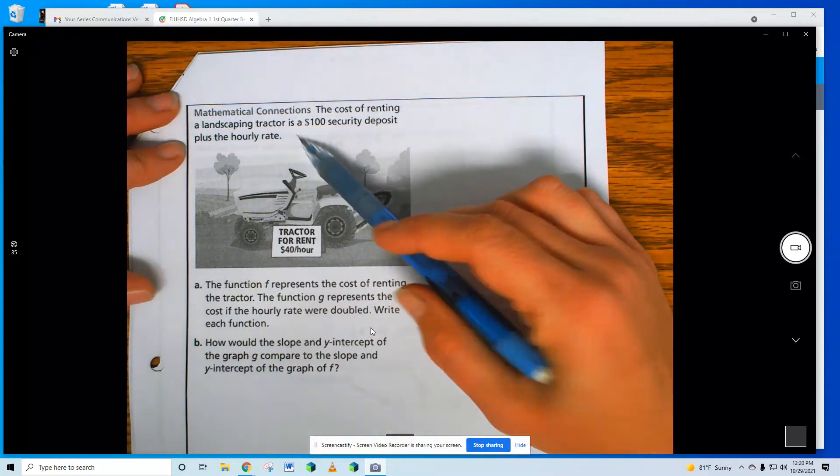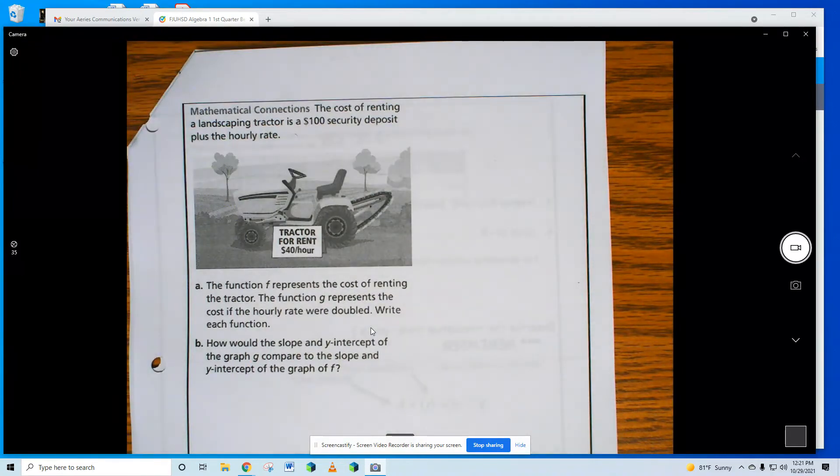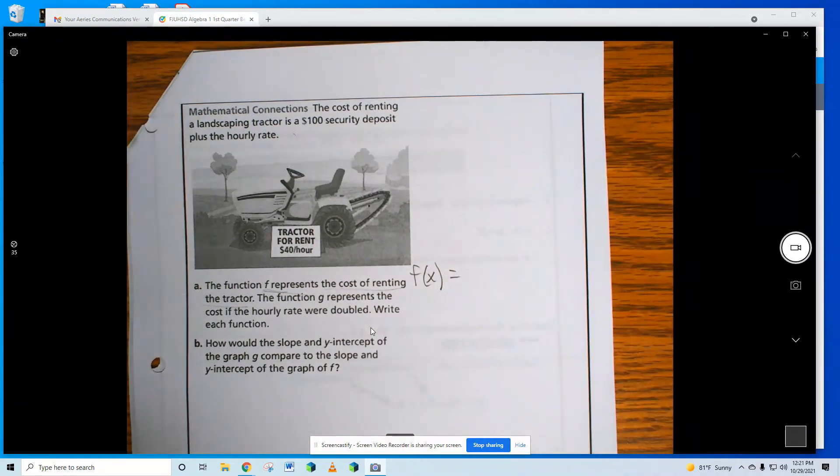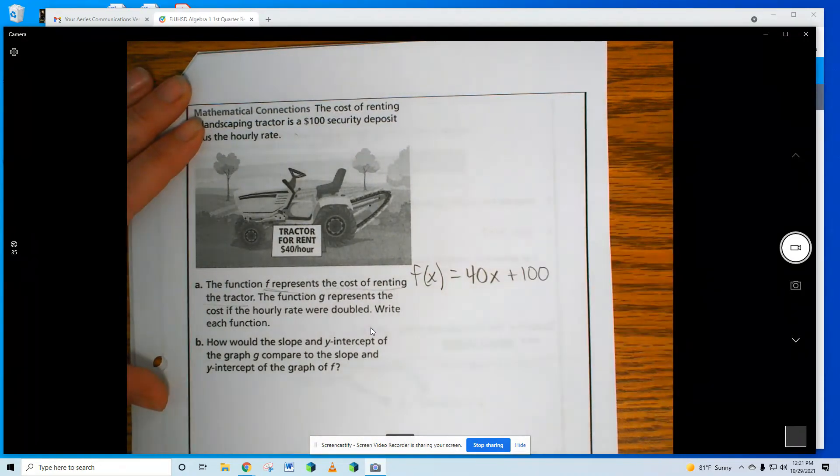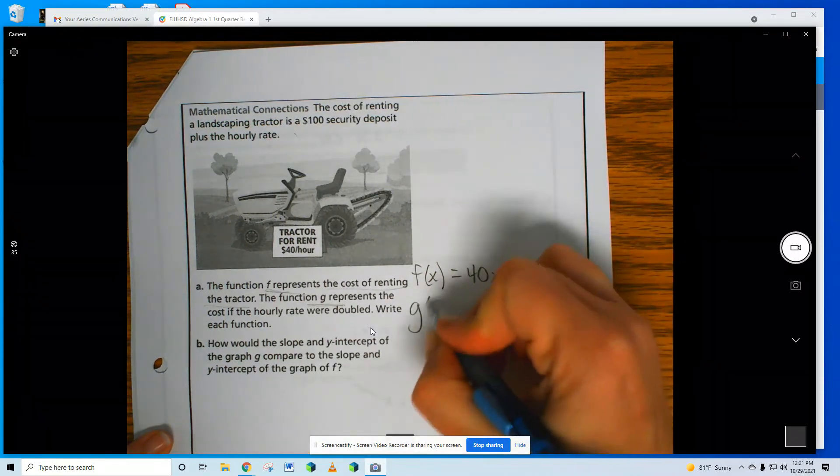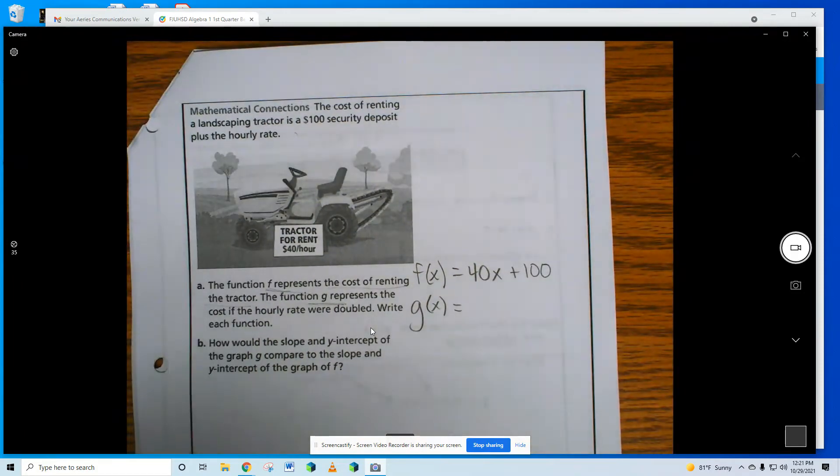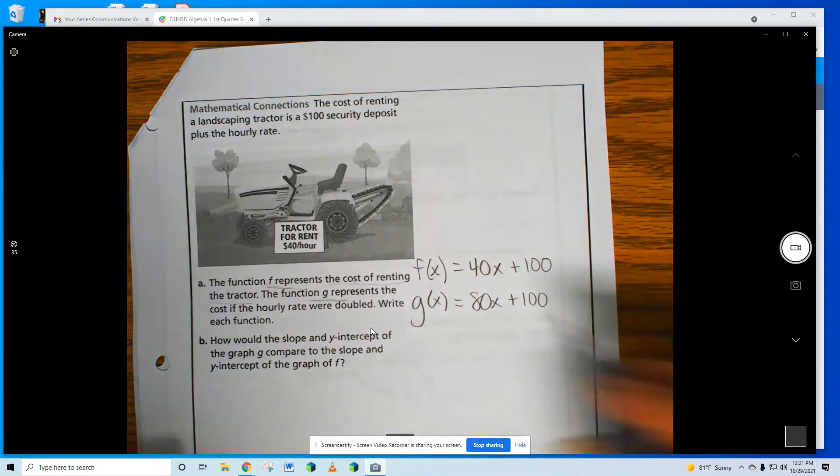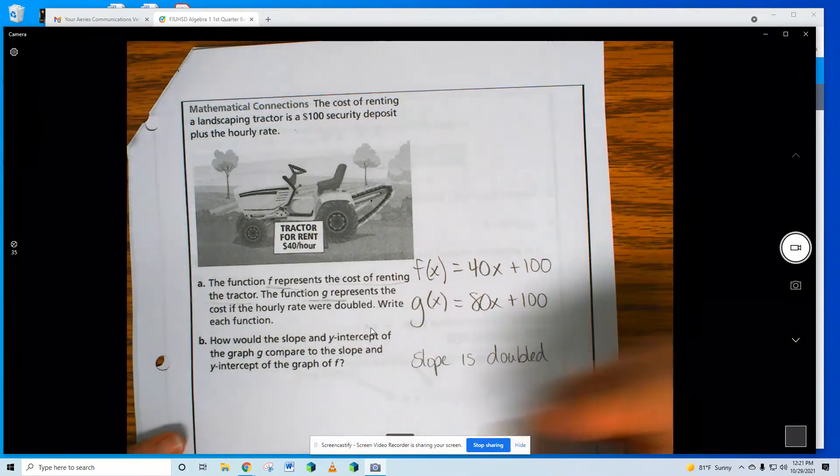The cost of renting a landscaping tractor is a $100 security deposit. I have to give them $100 plus $40 every hour if I rent for 2 hours, 3 hours. The function f represents the cost of renting the tractor. Here's f(x). I have to pay $100 and $40 every hour. Someone tell me. 40x plus $100, perfect. The function g, so I have to make another equation, g(x). If the hourly rate were doubled, if the hourly rate were doubled, so I need someone to tell me what it would be. Yes, sir: 80x, and then the $100 stays the same. Good job. So comparing them just means that the slope is doubled.